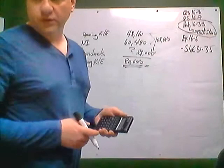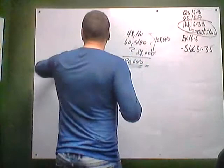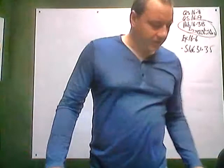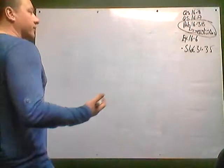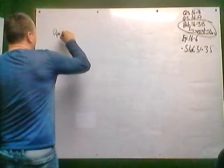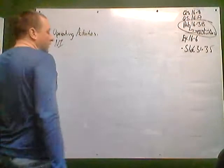That was Part A. From there, the question asks to prepare a statement of cash flows. We haven't gotten to the investing section or the finance section yet, so let's just focus on operating, because I think operating could be the hardest. So let's start with our operating activity. Our net income was $60,480.